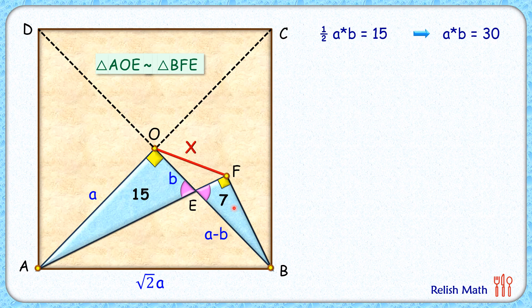As the triangles are similar, thus the ratio of their areas will be the square of the ratio of their corresponding sides. So ratio of area of triangle AOE to triangle BFE is the square of ratio of sides AE upon BE.